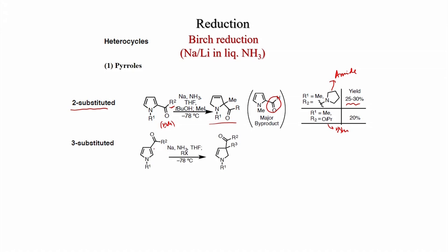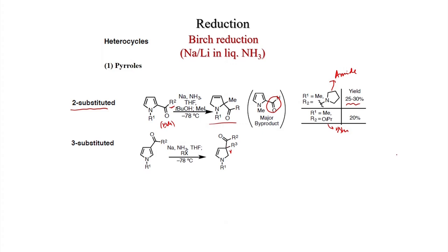For 3-substituted pyrroles bearing the EWG at position 3, the desired reaction gives 2,3-dihydropyrrolidine, with alkylation at the electron-withdrawing carbon. When R1 = Boc, R2 = pyrrolidine amide, and alkylation is with iodomethane (R3 = methyl), 70% yield is obtained. With benzyl bromide as alkylating agent (Boc/pyrrolidine amide system), 69% yield is obtained.